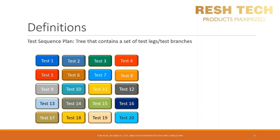A test sequence plan is a tree that contains a set of test legs or test branches, and captures all validation, reliability, safety, and regulatory and compliance tests that will be performed on a product. Depending on your company's needs, you might break up your test sequence plans into separate documents for each category. However, I recommend compiling all of your test legs into an overall testing tree so that your company has a high level understanding of all the different types of tests that need to be performed on your product before it can be shipped and sold to customers.